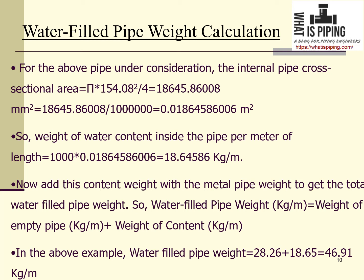In this way we can easily calculate empty or water-filled pipe weight for any pipe material — we simply need to know the density of that material. Here we used 7850 kg/m³ for carbon steel. For plastic pipes such as HDPE, PE, or GRP, or for copper pipe, the density will be different. Using the correct density and following the same volume calculation steps, we can calculate the pipe weight for any material.